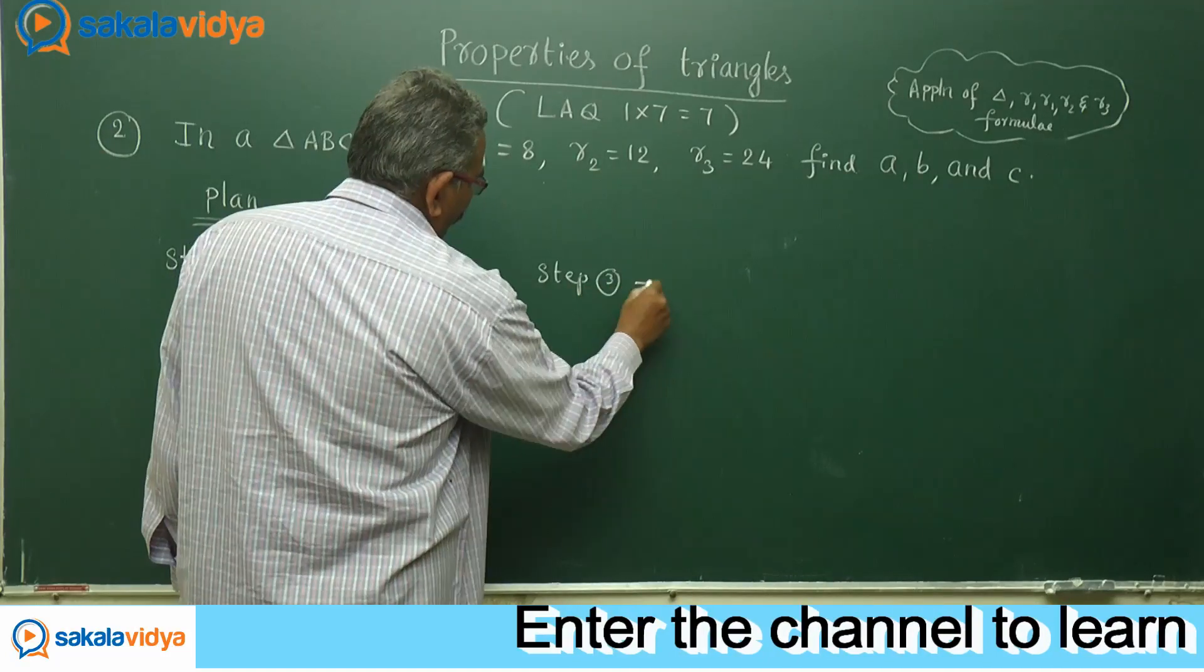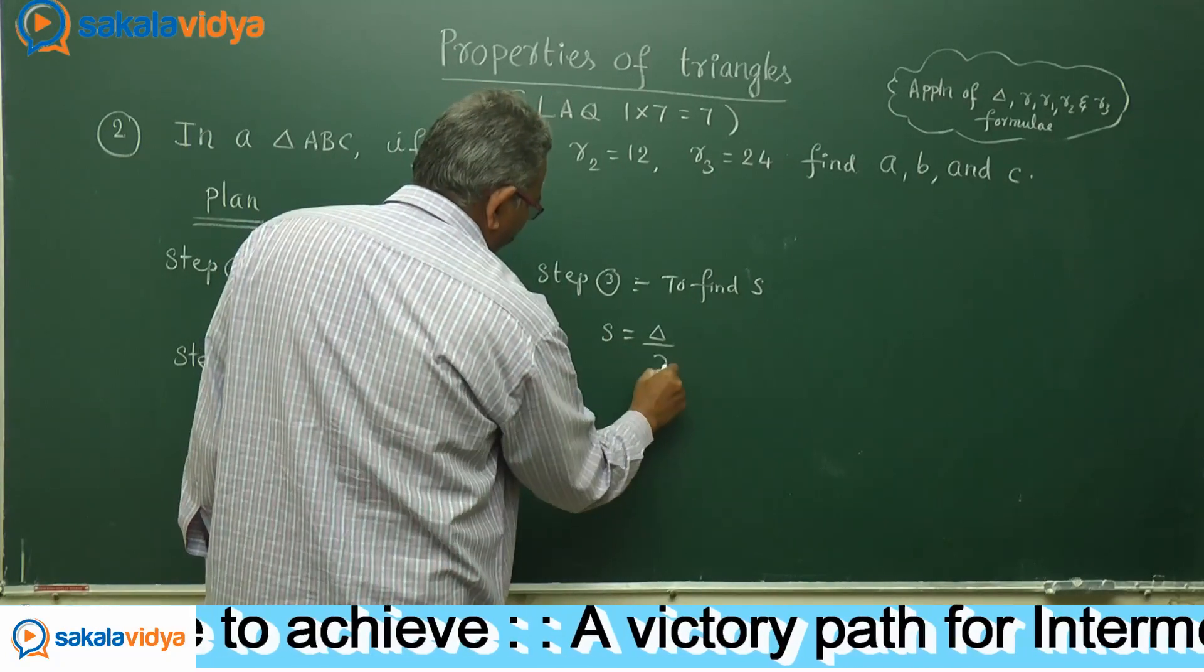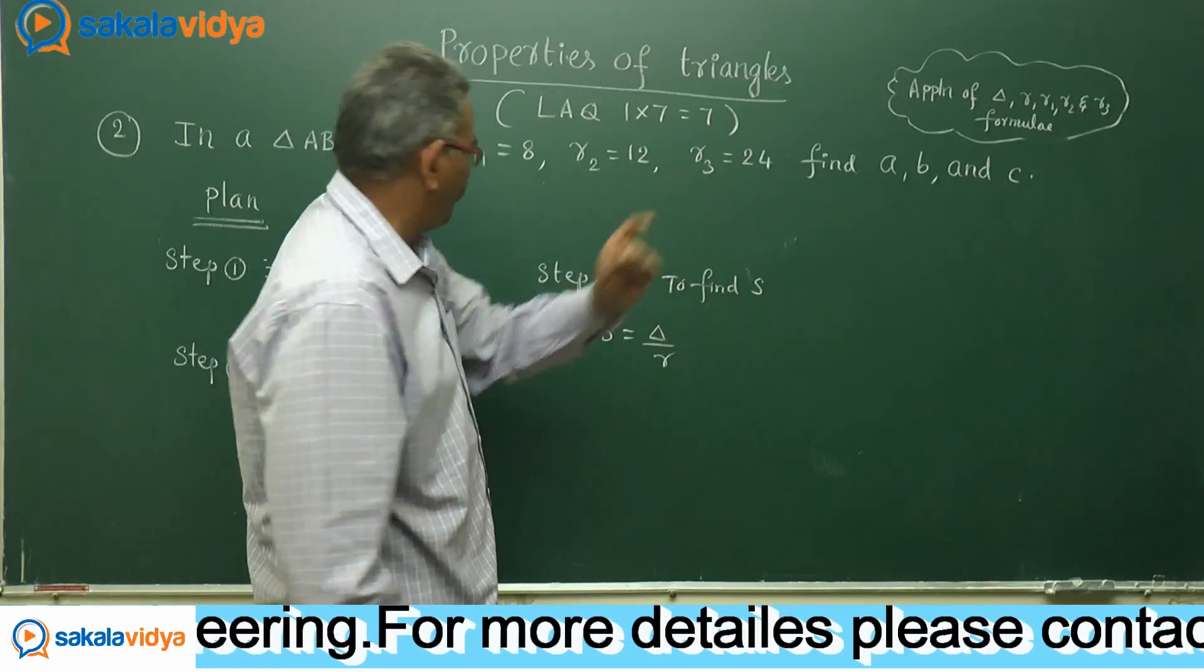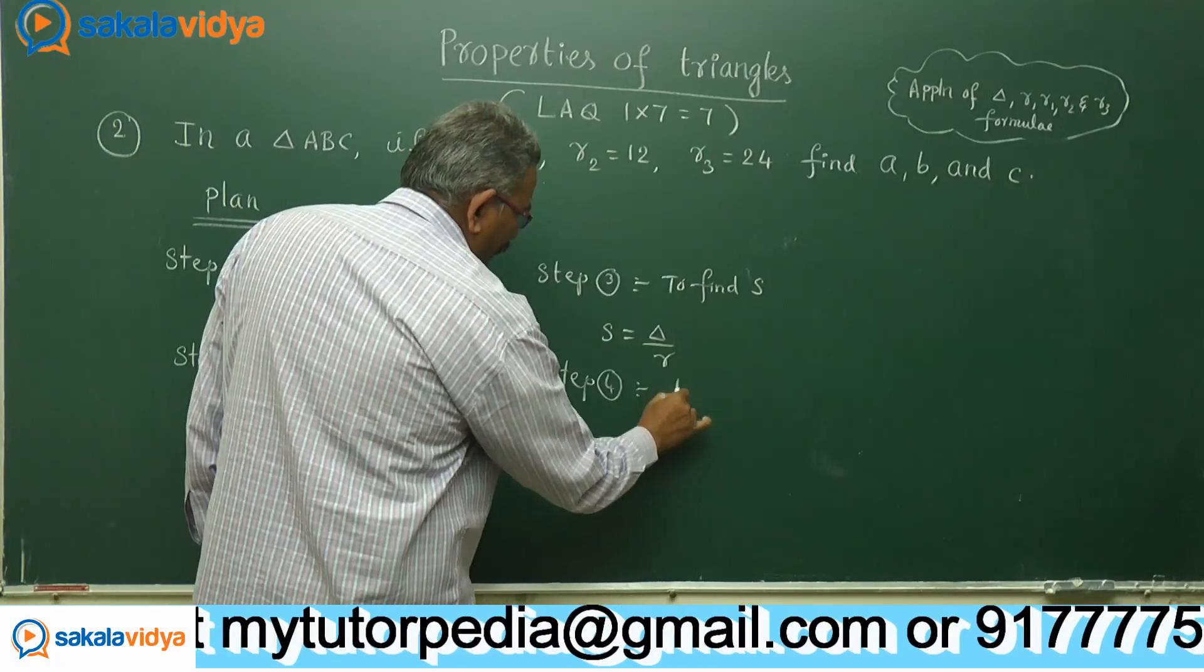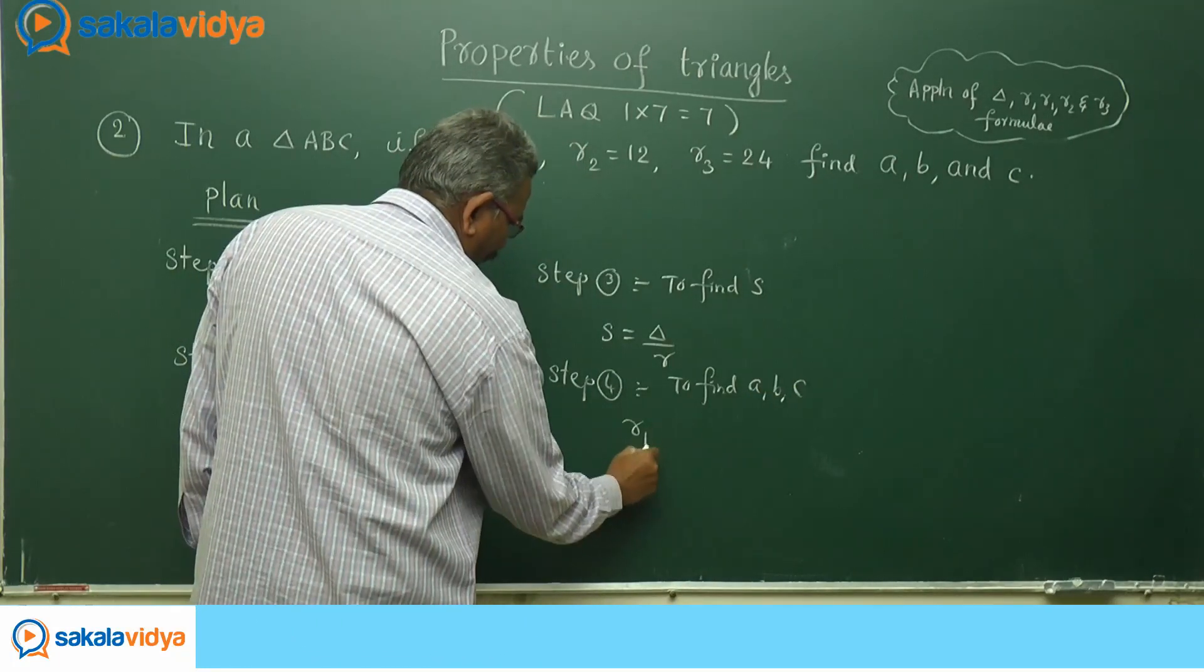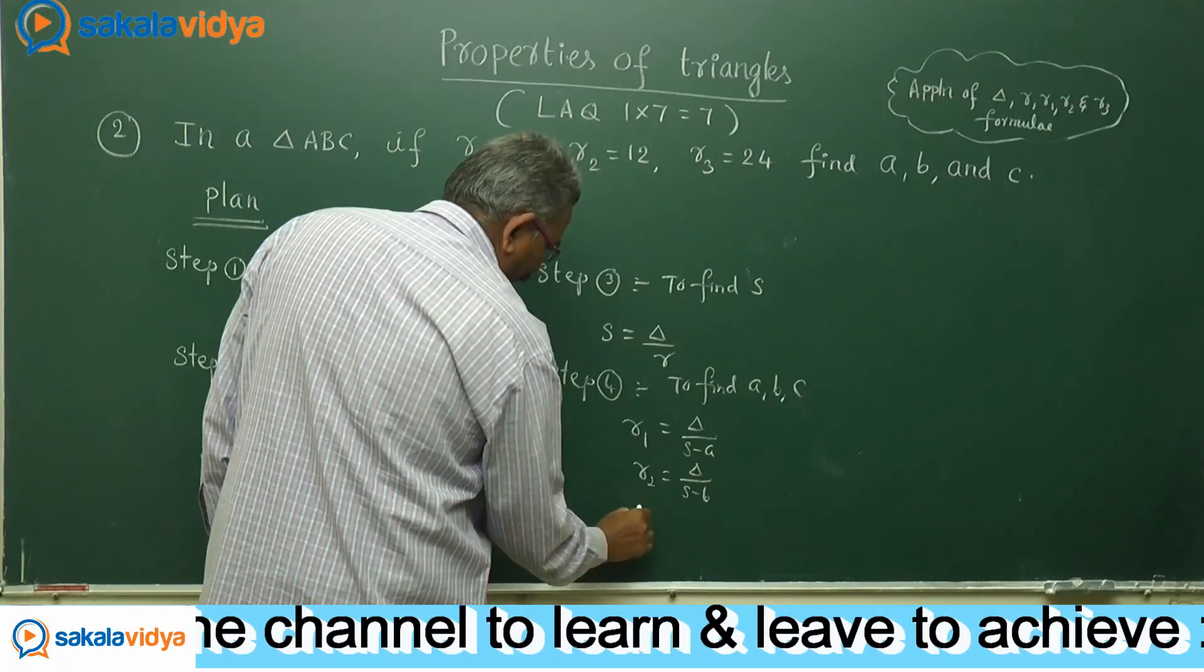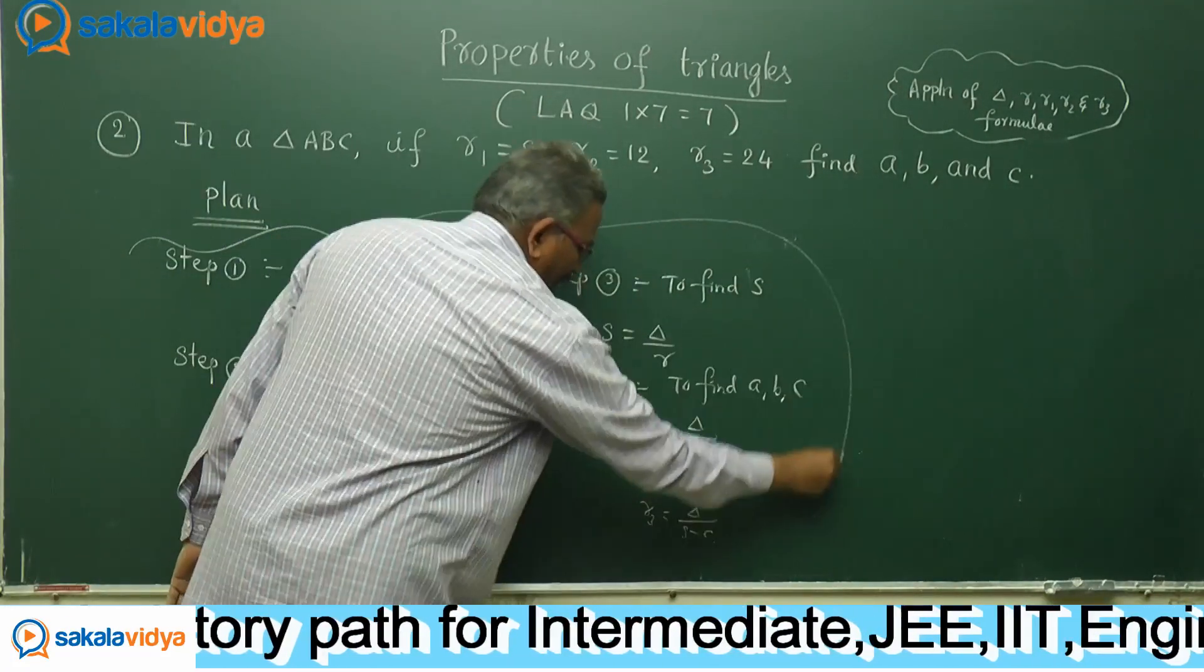S equals delta by r. In step 3 we know delta. In step 1 we have r, so S value can be evaluated. Now in order to find out a, b, c, the last step: we need to recall R1 formula delta by S minus a, R2 formula delta by S minus b, R3 formula delta by S minus c. This is our planning.